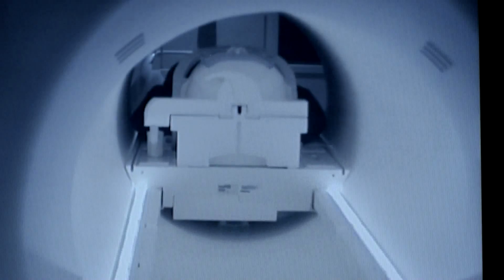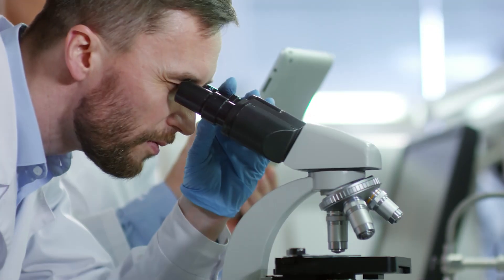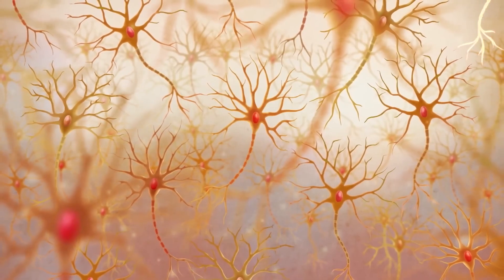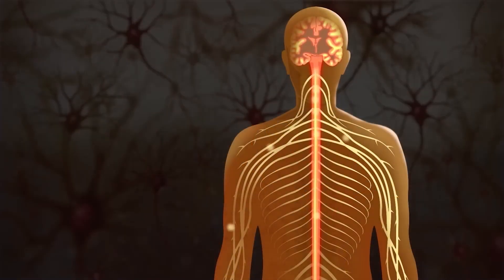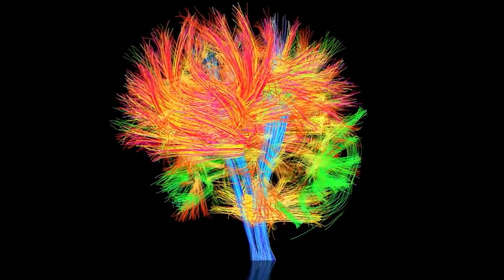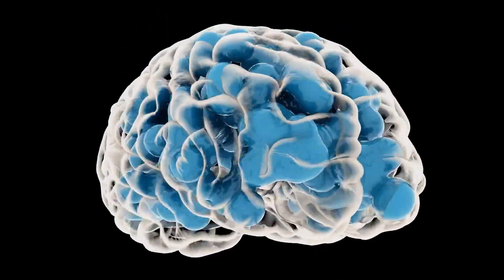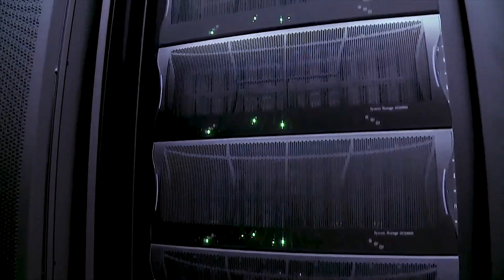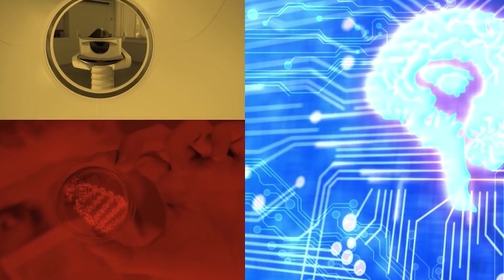The process begins with meticulously recorded data from a real, living brain. Neuroscientists use special microscopes to observe and record how neurons interact, how they fire and communicate. This data forms the bedrock of the simulation, providing the details that the supercomputer will later use to create its virtual brain.